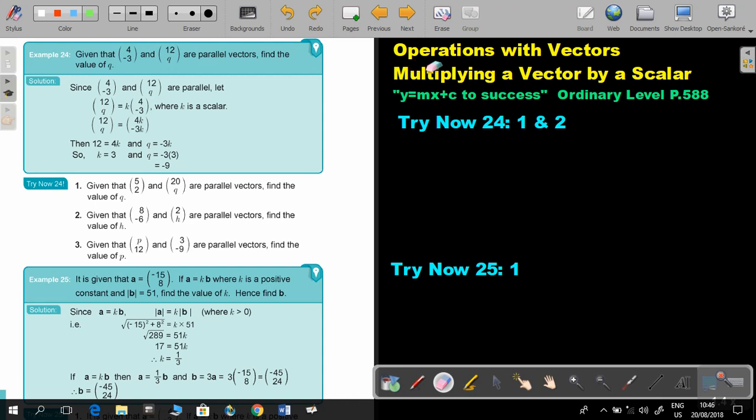We are going to continue with operations with vectors, and we are going to keep on with multiplying a vector by a scalar. You will find this on page 588 in the Namibia Ordinary Level Mathematics Textbook, Y equals MX plus C to success.